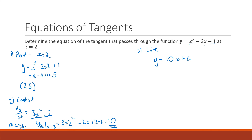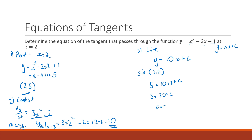In our equation of a line y = mx + c, we substitute 10 in for m. If you don't know the rule to differentiate, you can use two points that are really close together to get a good approximation for the instantaneous gradient. Now we just need to work out c, so we substitute in our point (2, 5): our y value is 5 and our x value is 2.